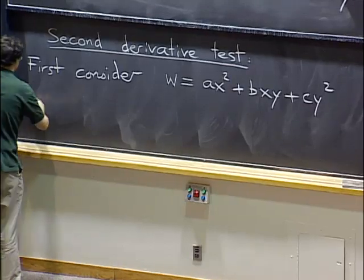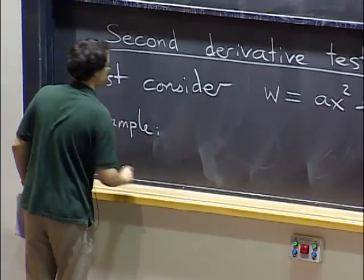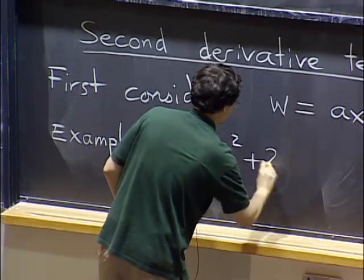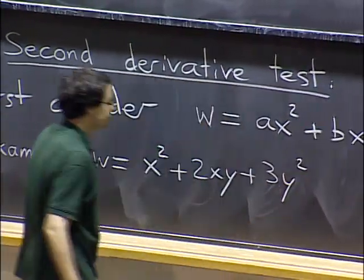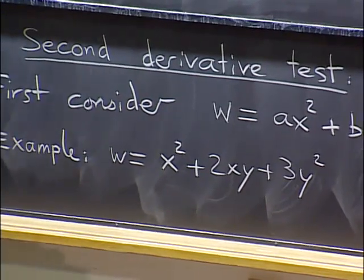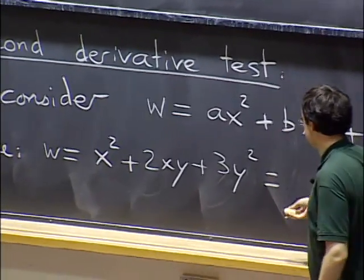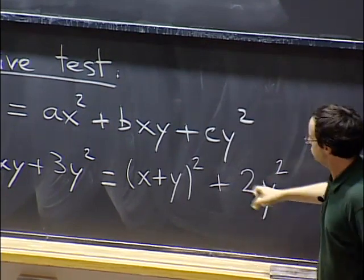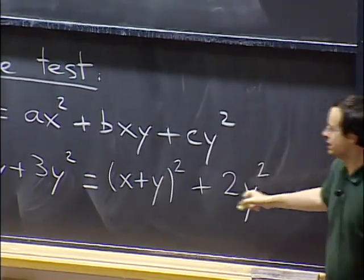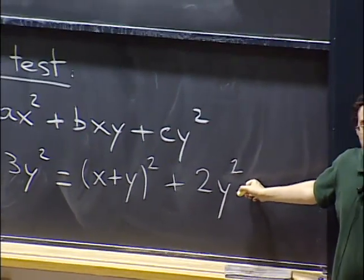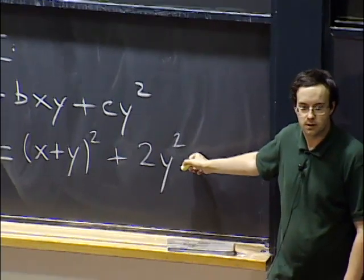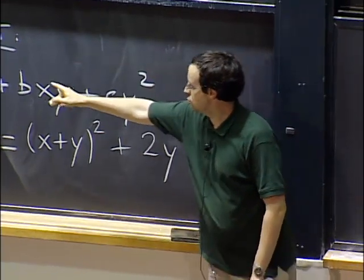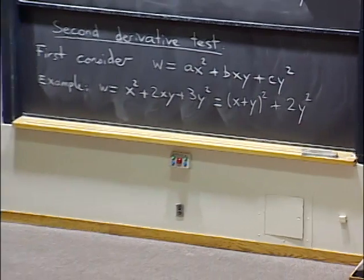Yesterday we did an example with x² + 2xy + 3y². We rewrote it as (x + y)² + 2y², which is a sum of two squares. Each of those is non-negative, so the origin is a minimum. It turns out we can do something similar in general, for any values of a, b, and c — we just try to complete the square. Assuming a is non-zero, we write ax² + bxy as a times (x + b/(2a)·y)² minus b²/(4a)·y², then add cy².